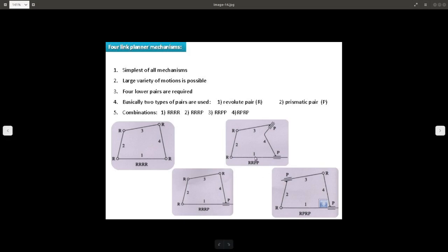And in these two mechanisms we have removed one more revolute pair and we have put a prismatic pair. In this case we have removed this revolute pair and we have put the prismatic pair.